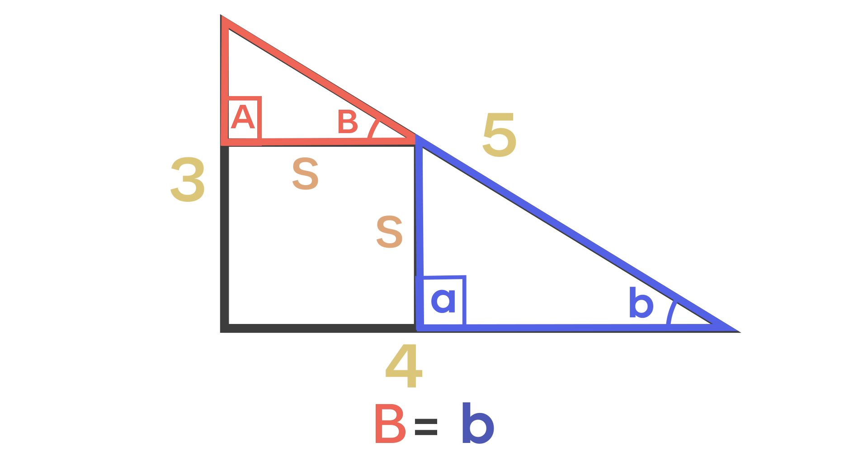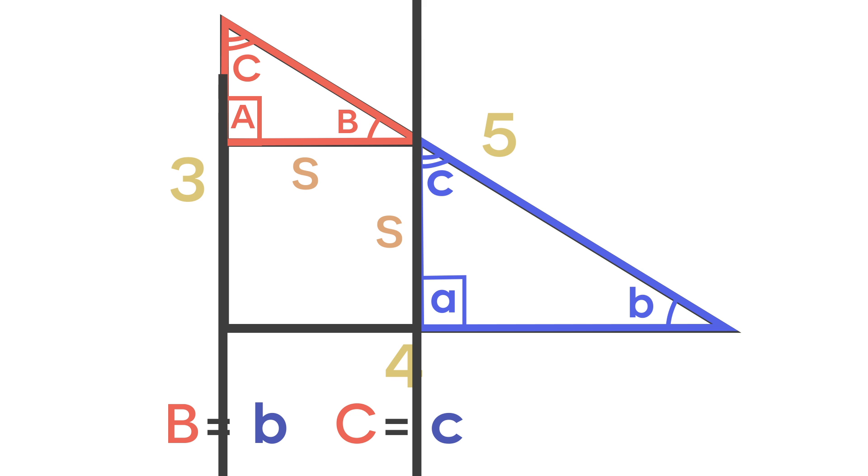And if we keep going counter-clockwise, let's label the last angle with the letter C. In the top triangle we'll label it with a capital C, and in the other triangle we will label the angle with a lowercase c. And just like angle B, angle C in both triangles are going to be equal to each other. This is because sides AC in both triangles are parallel, which makes angle C in both triangles corresponding angles, which once again makes them equal.